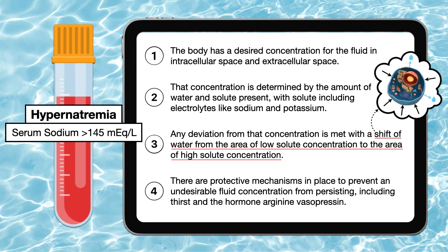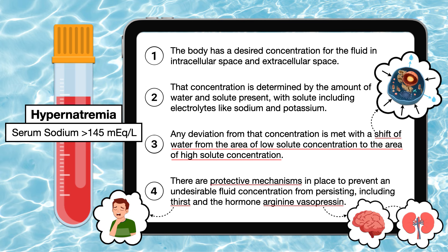With hypernatremia, which I defined as a serum sodium level greater than 145 milliequivalents per liter, water was pulled out of the cells, causing them to shrink. The protective mechanisms faltered, whether from an inability to satisfy the demand for more water or an inability of the body to produce or respond to arginine vasopressin, whose function is to enhance water reabsorption.